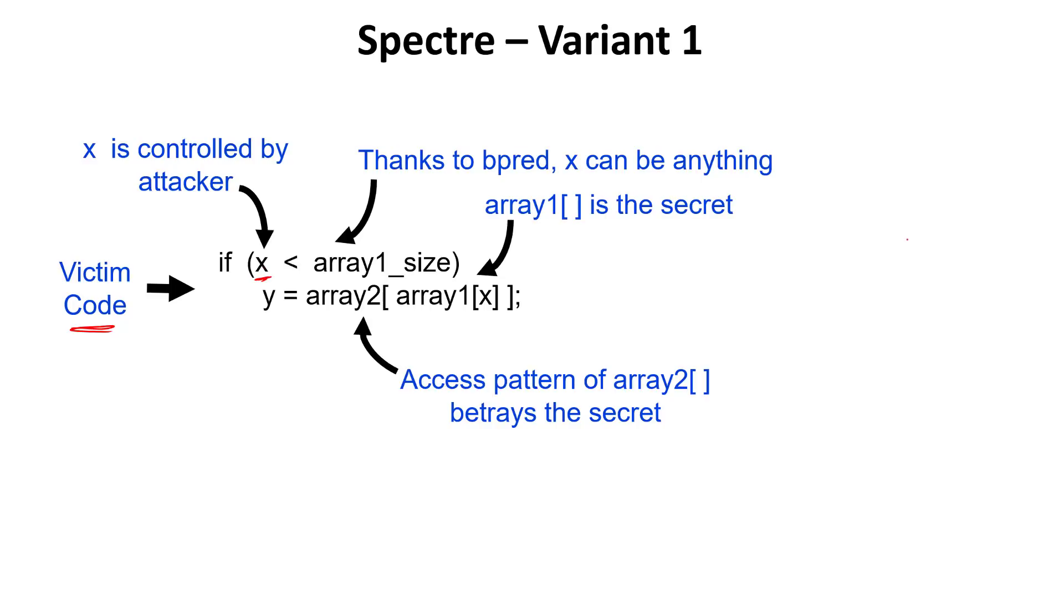In this particular piece of code over here, there is a variable X that's actually being controlled by the attacker. The victim has two primary data structures: array 1 and array 2. If you look at the victim code, it's actually pretty well designed and looks fairly innocuous. When it receives an input from the attacker, it confirms that this input X is within the bounds of array 1. Once it does that check, it's going to access array 1. Once it gets that value, it's going to use that as an index into array 2.